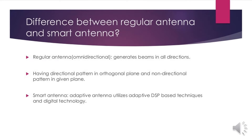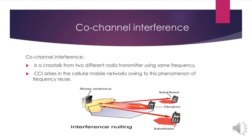A regular antenna is omnidirectional, meaning it generates a beam in all possible directions. The directional pattern is orthogonal in one plane and non-directional in a given plane. A smart antenna, by contrast, utilizes adaptive DSP-based techniques as well as digital technology. Co-channel interference is a common issue in transmission, occurring when two different radio transmitters use the same frequency — this cross-talk is called co-channel interference, and it arises in cellular mobile networks due to frequency reuse.